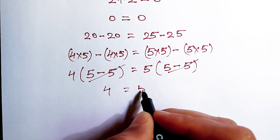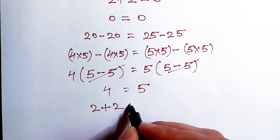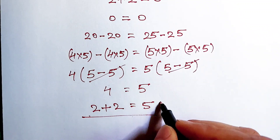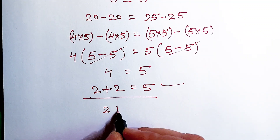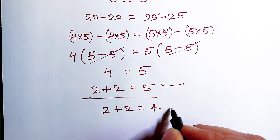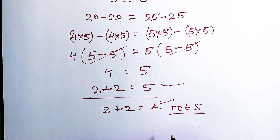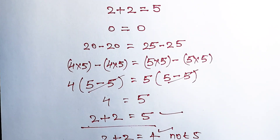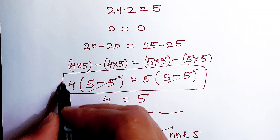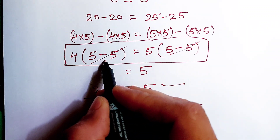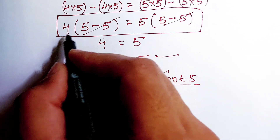So 4 equals 5, which can be written as 2 plus 2 equals 5. There is a proof! But in mathematics, 2 plus 2 is equal to 4, not 5. So where do we have the mistake? Let's find out. We have a mistake in this part of the question — how we cancelled out this term with this term.